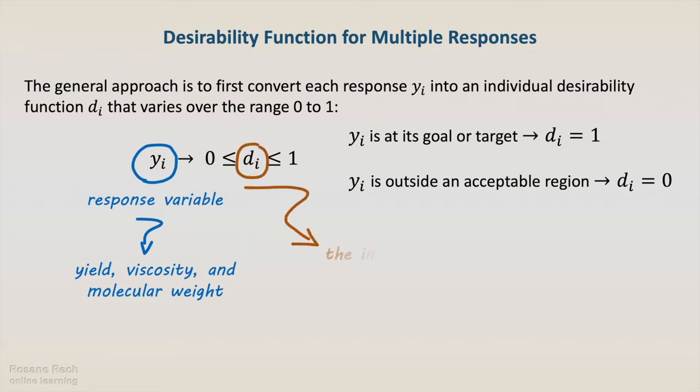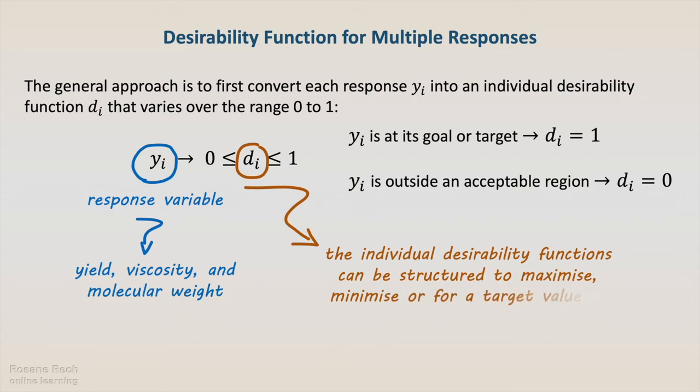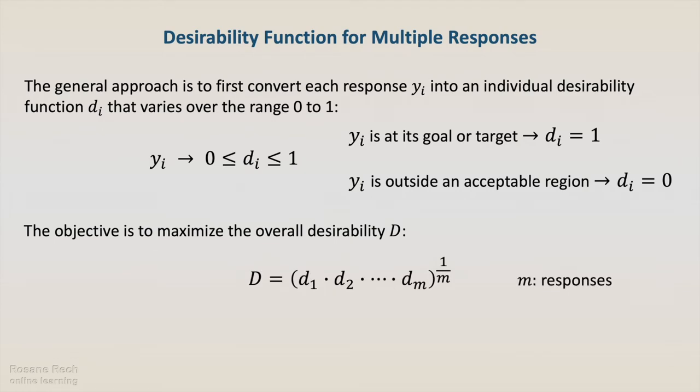The individual desirability functions can be structured to maximize, minimize, or for a target value of the response variable. The objective is to maximize the overall desirability, which is a combination of the individual desirability functions from each response.